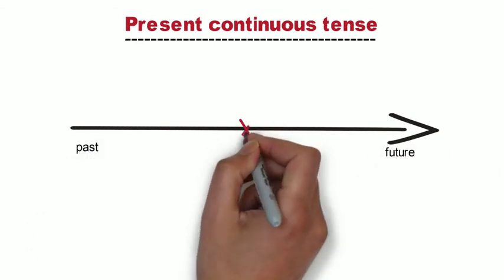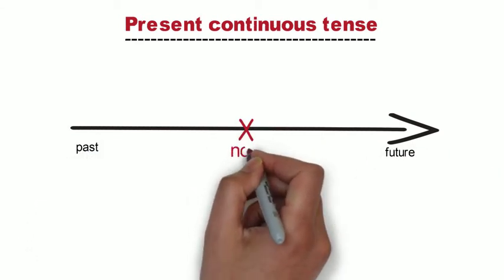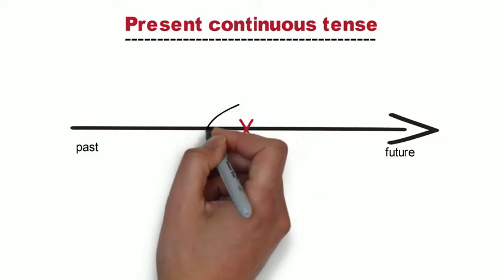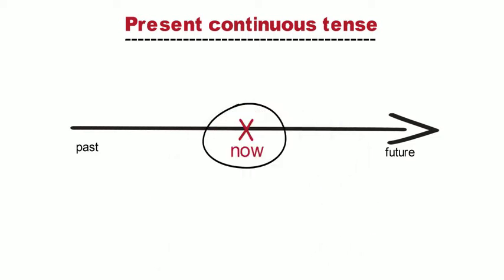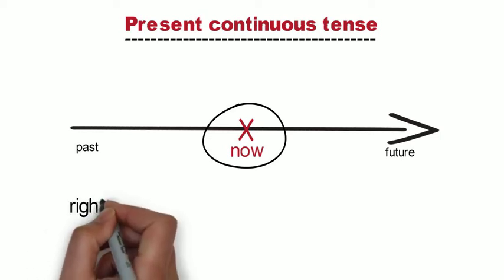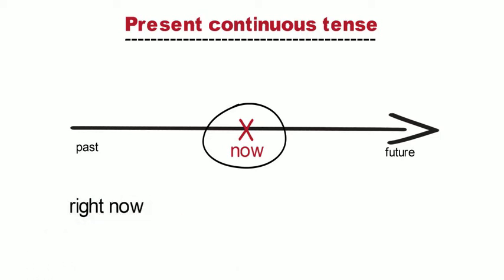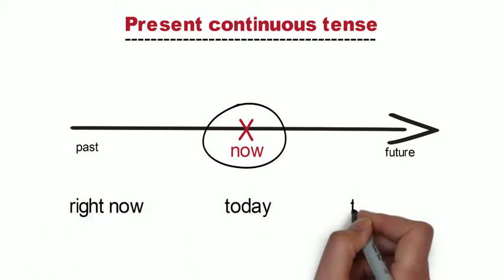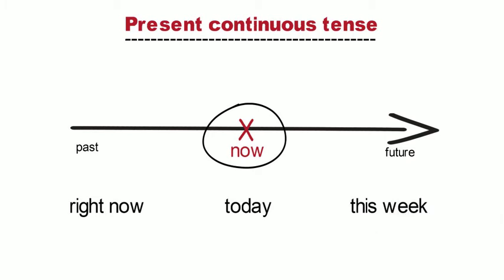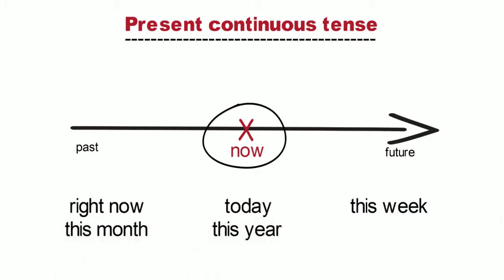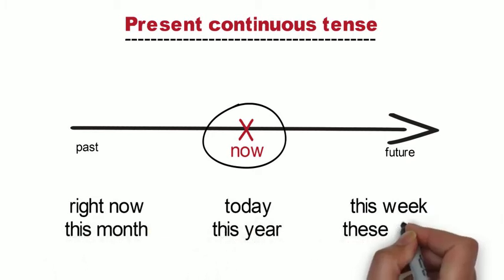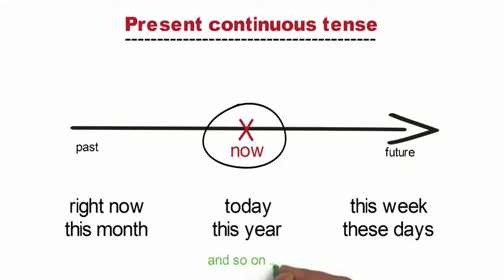We can also use the present continuous tense to talk about longer actions that are happening nowadays. This means that they are happening right now, or today, this week, this month, this year, these days, and so on.